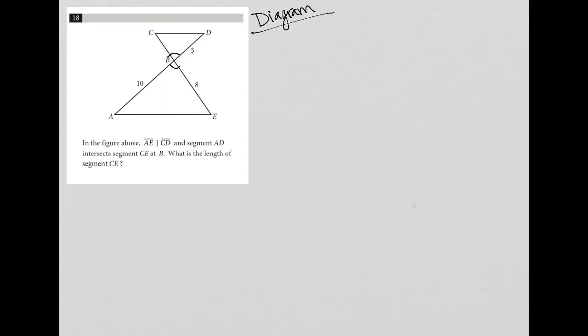The question says in the figure above, line segment AE is parallel to line segment CD. So I'm going to just draw in my parallel symbols here. And also think about, well, if those lines are parallel, what else can I say?